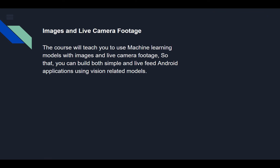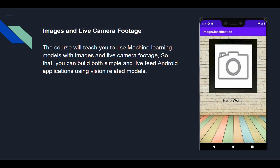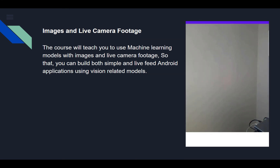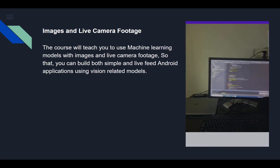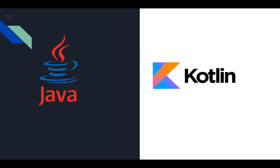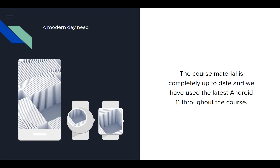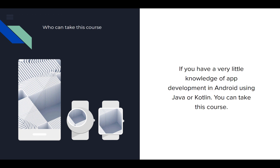Throughout this course, we are going to deal with a number of features related to computer vision, so this course will teach you to use machine learning models with images and live camera footage, so that you can build both simple and live feed applications using those vision models. The course is recorded using both Java and Kotlin programming languages, and all of the course resources are available for both of these languages. The course material is completely up to date, and we have used the latest Android 11 throughout the development of this course. If you have a very basic knowledge of app development in Android using either Java or Kotlin, you can take this course.